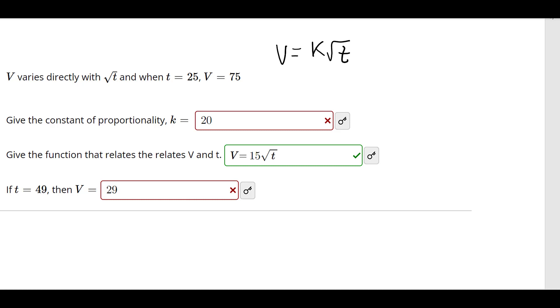Then it gives us some conditions that says V is 75 when t is 25. So 75 equals k times the square root of 25.